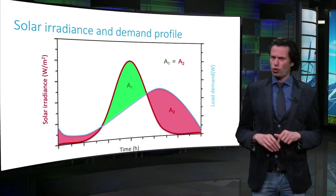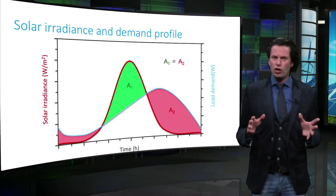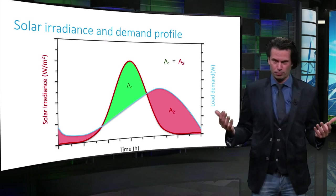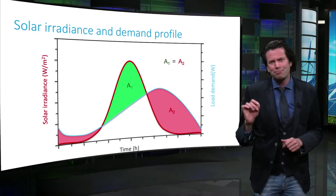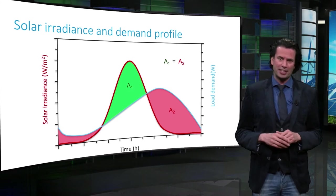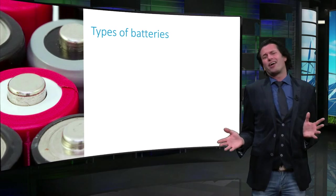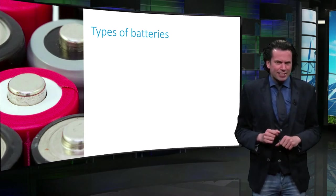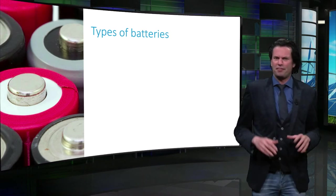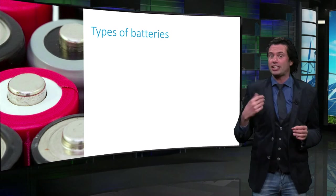There are several technological options to fulfill the storage requirements. How do we make an optimal choice for the storage system? Currently, the most useful storage option for PV system applications is battery storage. Batteries are electrochemical devices that convert chemical energy into electrical energy. They are mainly classified as primary or secondary batteries.